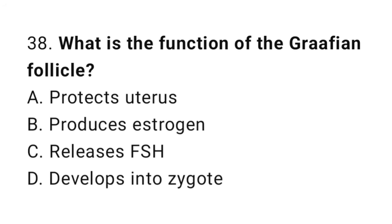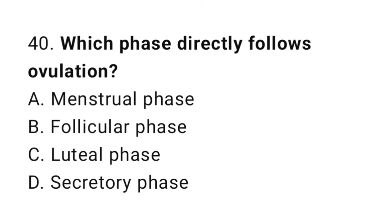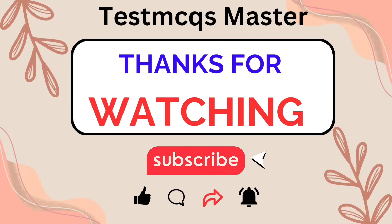Question number 38: What is the function of the Graafian follicle? The correct answer is B, produces estrogen. Question number 39: The absence of menstruation is termed? The correct answer is C, amenorrhea. Question number 40: Which phase directly follows ovulation? The correct answer is C, luteal phase. Thanks a lot for your time.